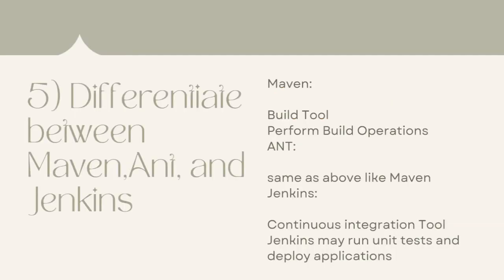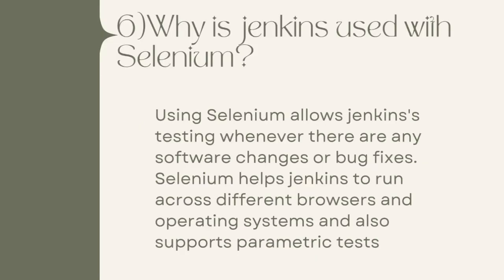Question 5: Differentiate between Maven, Ant, and Jenkins. Maven is a build tool used to perform build operations. Ant is similar to Maven. Jenkins is a continuous integration tool. Jenkins may also run unit tests and deploy applications.